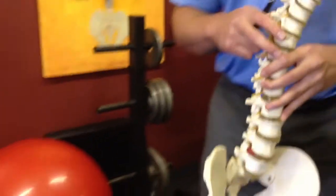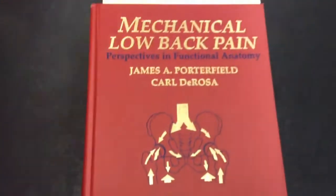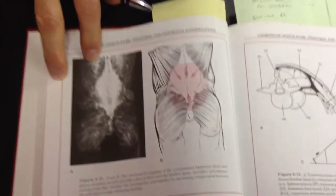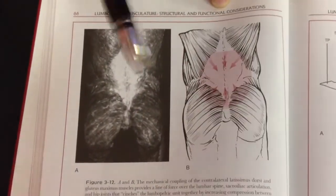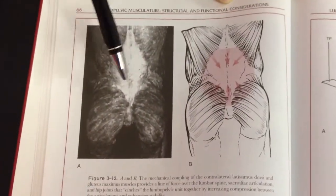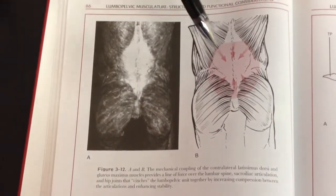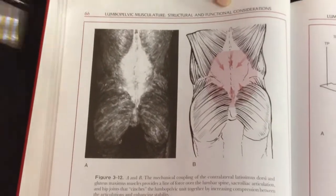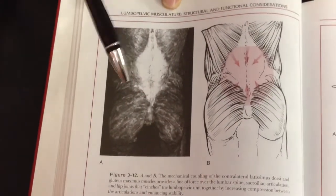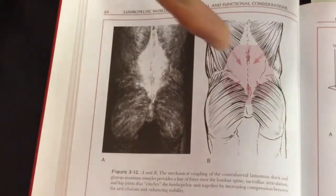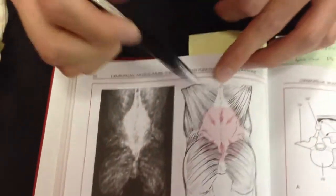If we look at this book right here — Mechanical Low Back Pain by James Porterfield — it really touches well on that subject. When we talk about the fascia, we're talking about the thoracolumbar fascia. This is the back of a cadaver, and the fascia is the shiny material once you peel back the skin tissues. When you create tension in this fascia, it pulls everything tight, causing stability.